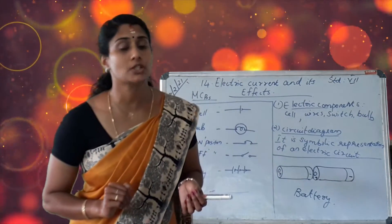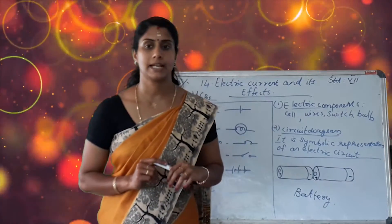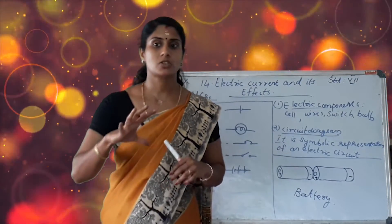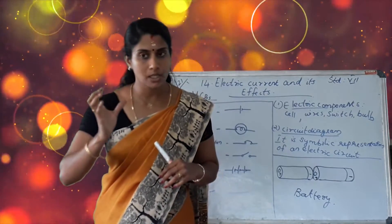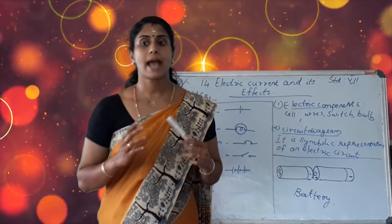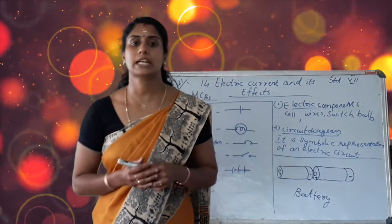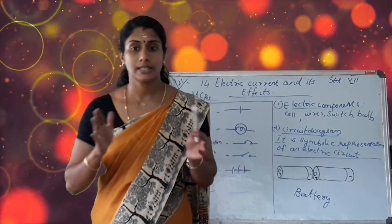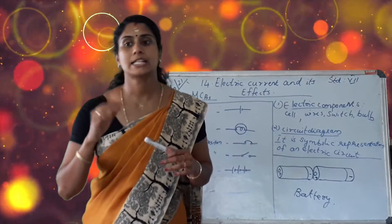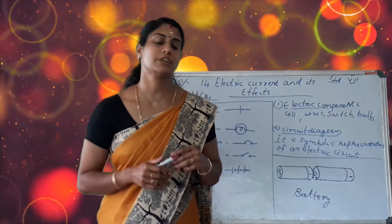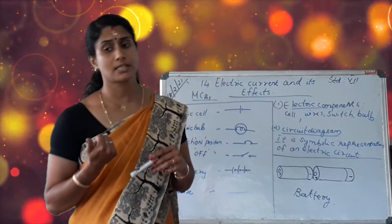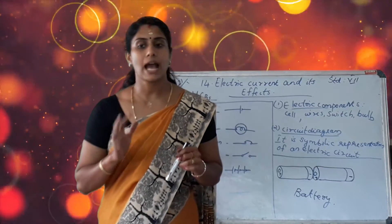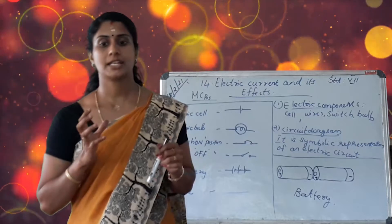Next we study the magnetic effect of current. When an electric current flows through a wire, it behaves like a magnet — this is the magnetic effect of electric current. What do you mean by an electromagnet? A current-carrying coil of wire wound around a piece of iron behaves like a magnet, and it is called an electromagnet.